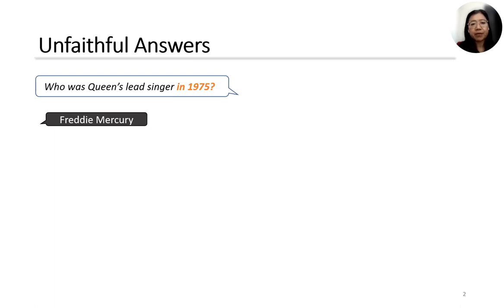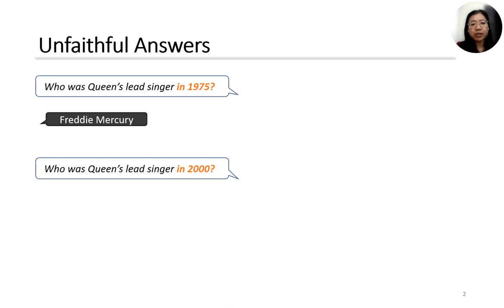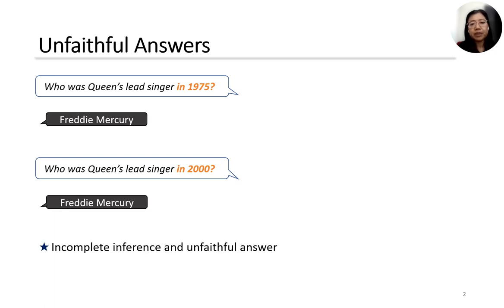For example, when we vary the question to 'in 2000', the systems would still output Freddie Mercury even though he was dead by then. This indicates the systems are unable to explain how the answers are derived.